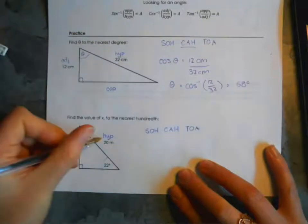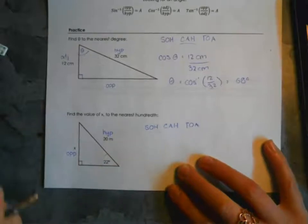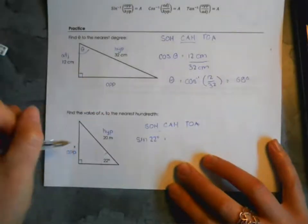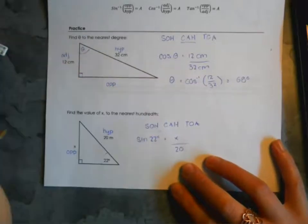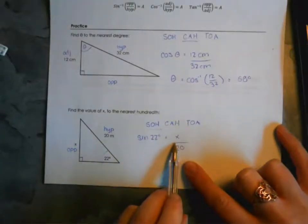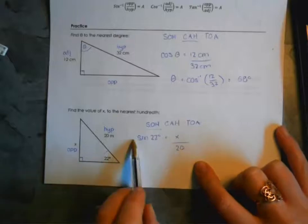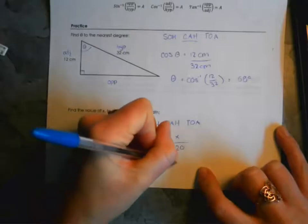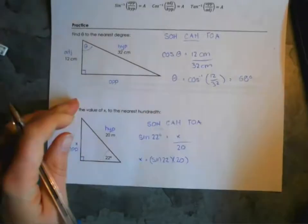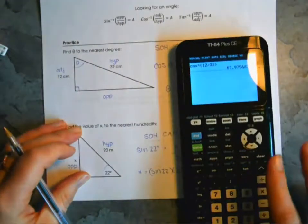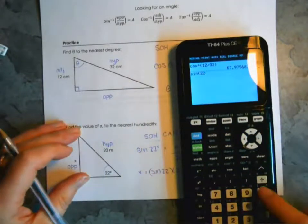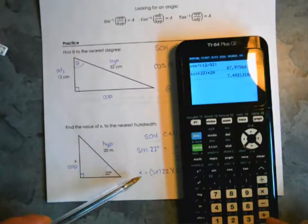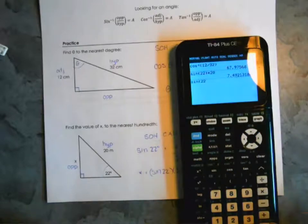We have opposite and hypotenuse, so the trig function is sine. Sine of 22 degrees equals x divided by 20. To isolate x, multiply 20 to the other side: x equals sine 22 times 20. In the calculator, you can do sine of 22, close the bracket, then multiply by 20.